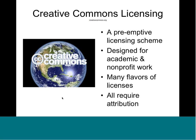Creative Commons licensing — creativecommons.org — is a preemptive licensing scheme designed primarily for academic and nonprofit work. There are six types of Creative Commons licenses, allowing varying degrees of control by the rights holder over the work. All of them require attribution, however. No matter what type of license the rights holder specifies, they're going to want attribution. This kind of licensing is exactly where Creative Commons can be so helpful, especially in affordable learning work.